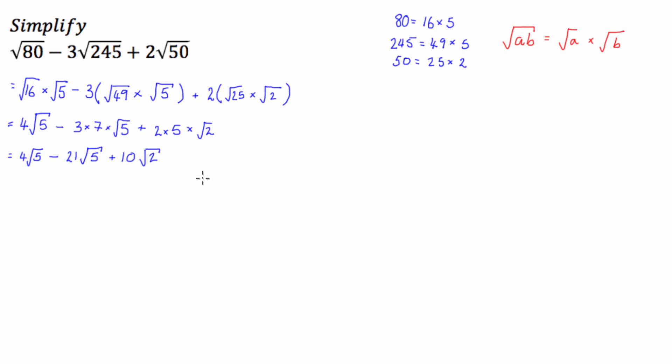Now, what we can do here is, like algebra, we can only add and subtract like surds, so surds with the same numbers underneath them, so we can actually take these two away from each other. So we can go 4 minus 21 is negative 17 square root of 5 plus 10 square root of 2.